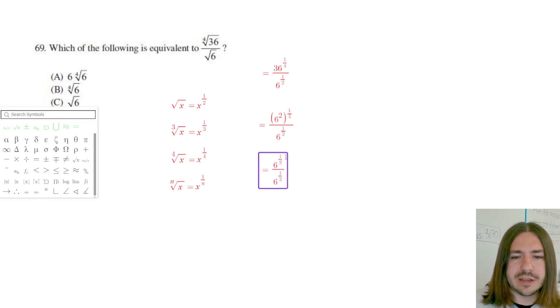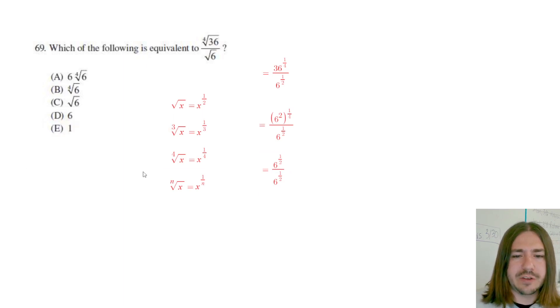Now, notice here I've got 6 to the one-half power divided by 6 to the one-half power, and any time I divide something by itself, I always get 1. So my answer here is going to be 1.